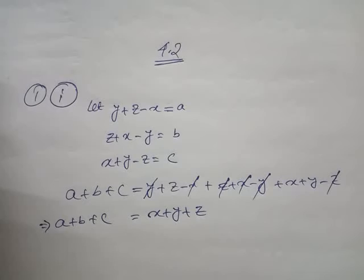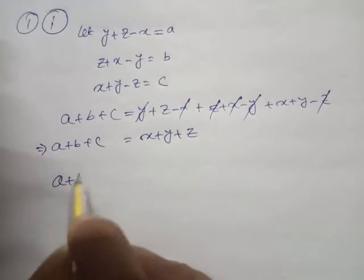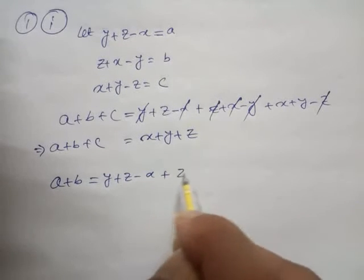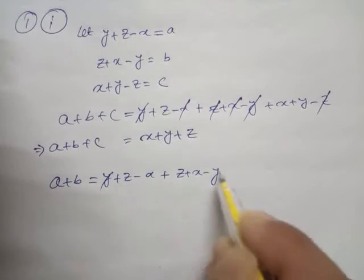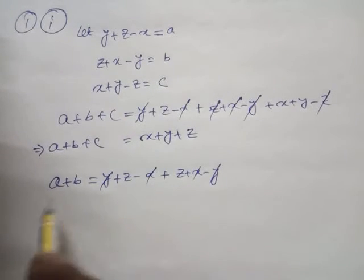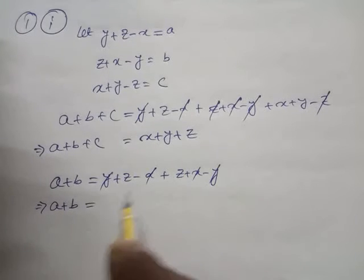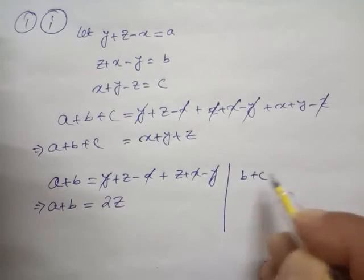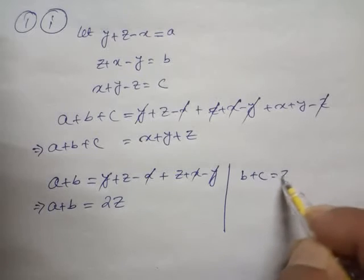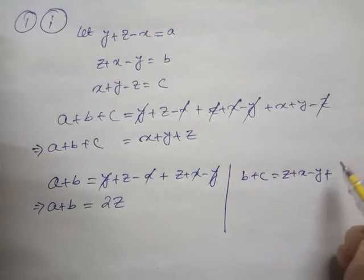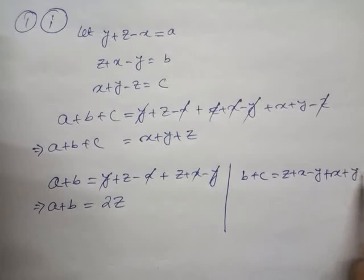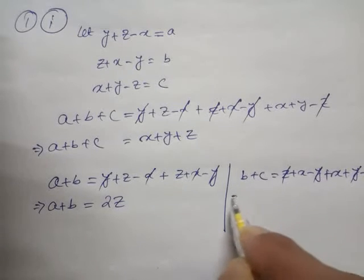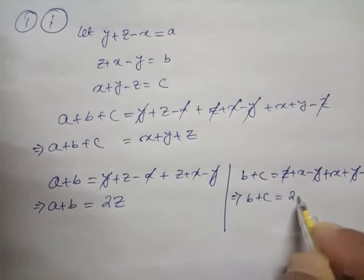Now look: a plus b equals y plus z minus x plus z plus x minus y. Then y and y cancel, x and x cancel. So the remaining part is a plus b equal to 2z. Similarly, b plus c equals z plus x minus y plus x plus y minus z. So this and this cancel, and this and this cancel. The remaining part is b plus c equal to 2x.